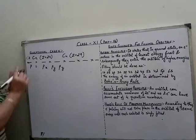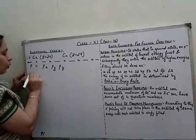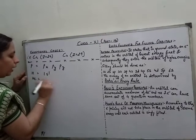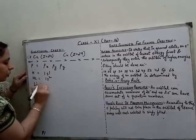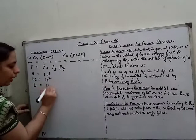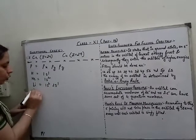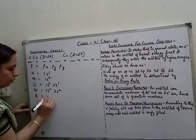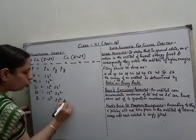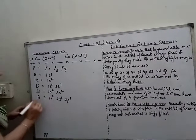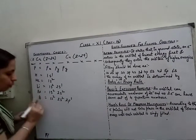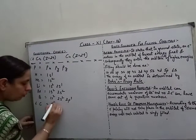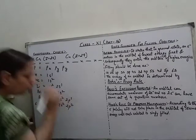According to this principle, let us write the electronic configurations. Hydrogen: 1s1. Helium: 1s2. Lithium (atomic number 3): 1s2 2s1. Beryllium: 1s2 2s2. Boron: 1s2 2s2 2p1. Then carbon (atomic number 6): 1s2 2s2 2p2. According to Hund's rule, electrons can only be paired when same-energy orbitals are singly filled.